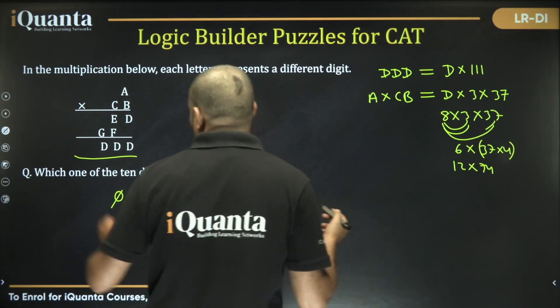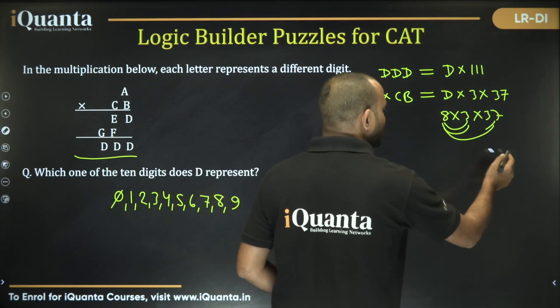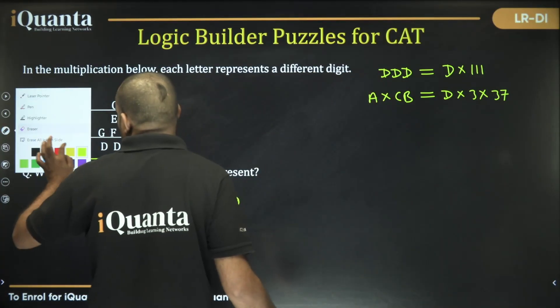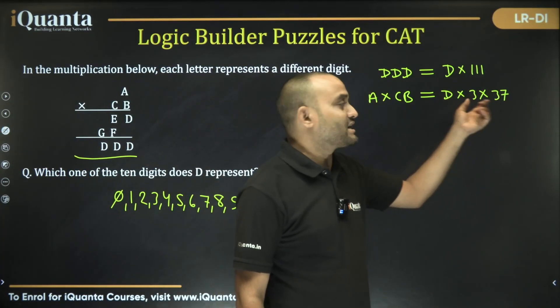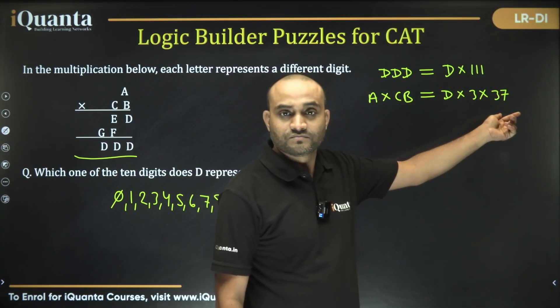Similarly, I cannot use D is equal to 7. Why is that? If you are taking D is equal to 7, how do you make this product as a two-digit into single-digit? 21 into 37, not possible.